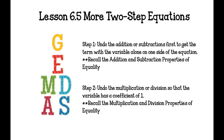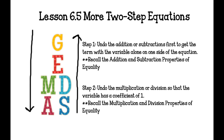Lesson 6.5 is more two-step equations. Remember that when we look at GEMDAS, if we are simplifying a problem, we use order of operations. But if we are trying to solve for a variable, we go backwards through GEMDAS. Our first step is to undo addition or subtraction first to get the term with the variable alone on one side. Step two is to undo the multiplication or division so the variable has a coefficient of 1. The golden rule of equations: what you do to one side, you must do to the other.